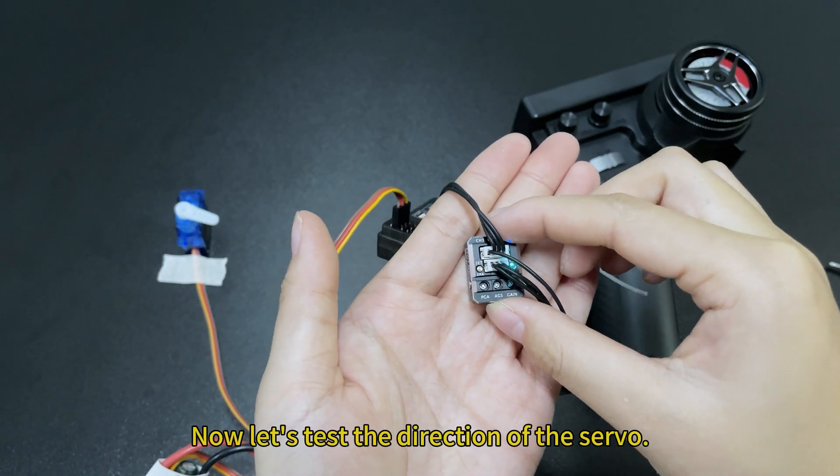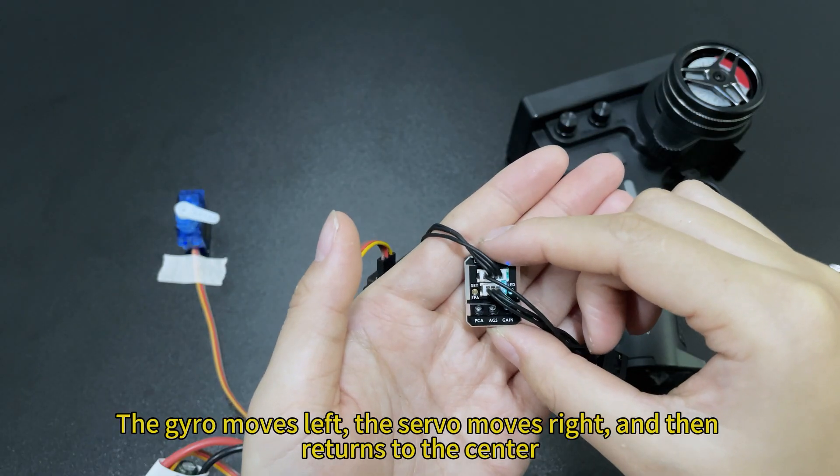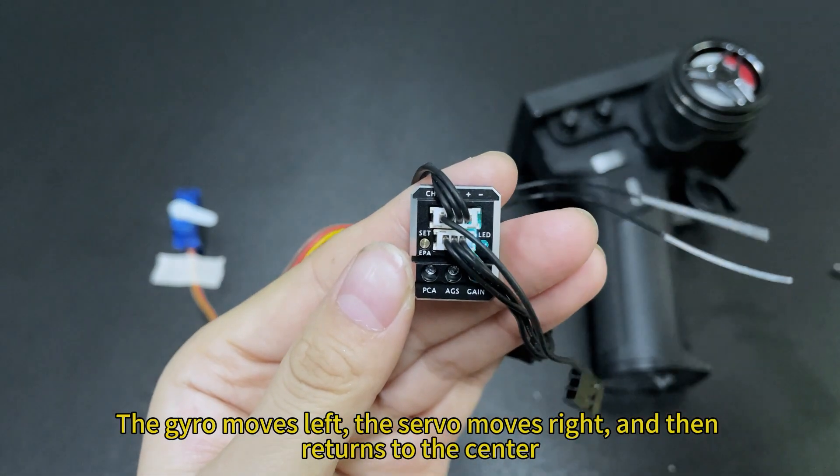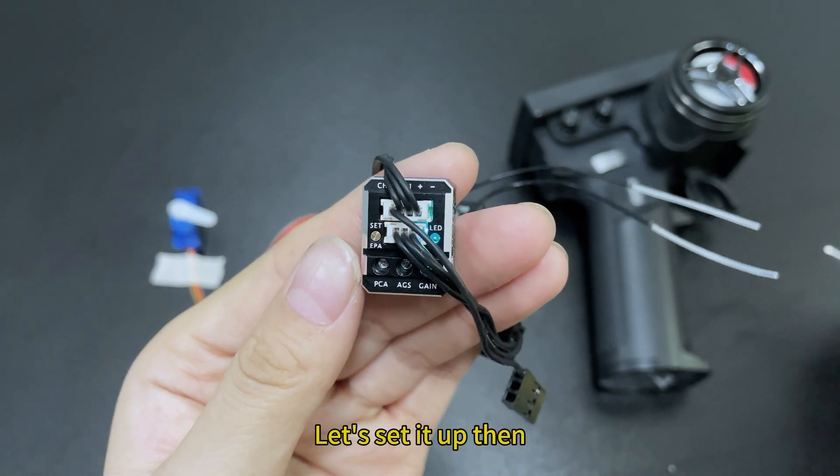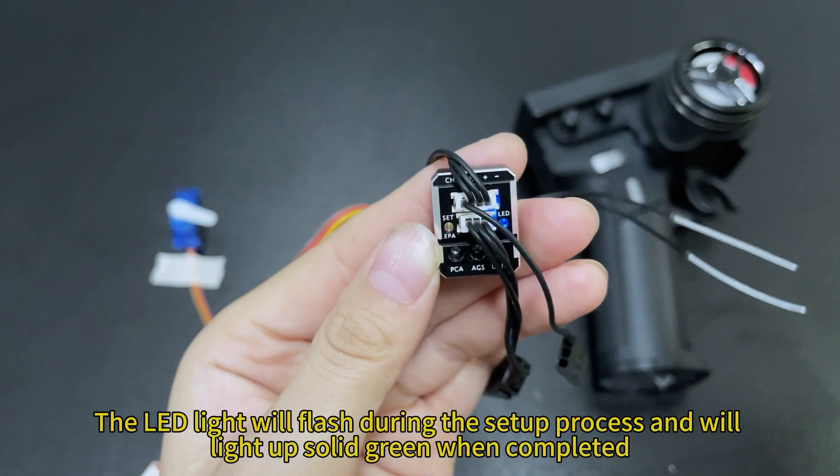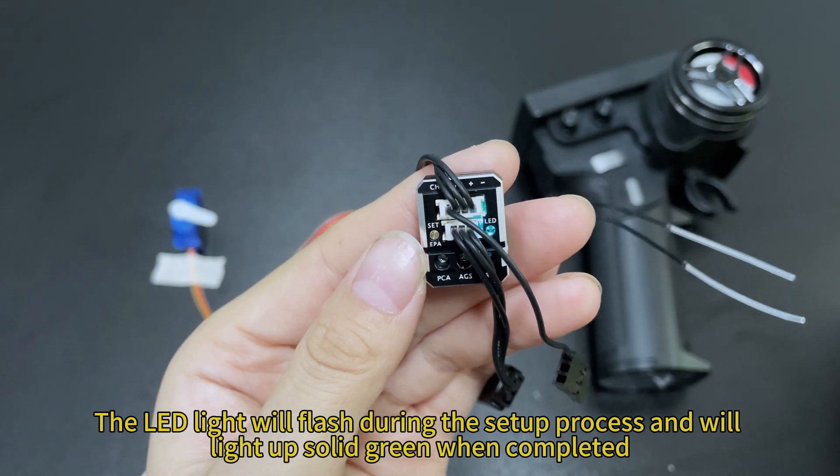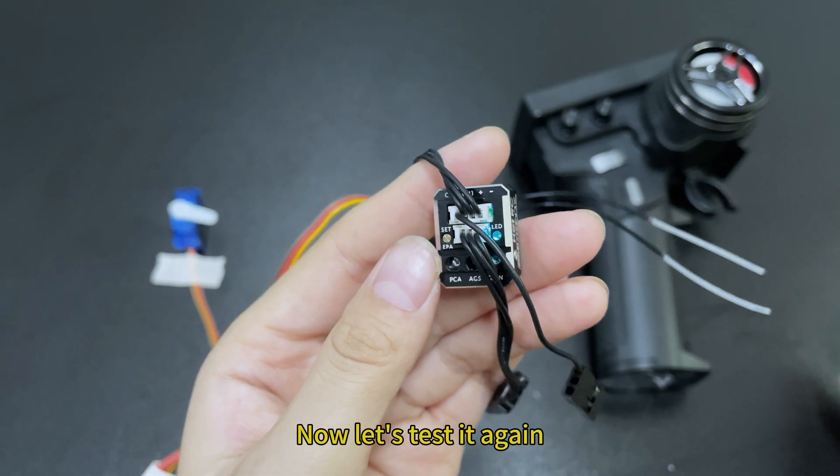Now let's test the direction of the servo. The gyro moves left, the servo moves right, and then returns to the center. Let's set it up then. The LED light will flash during the setup process and will light up solid green when completed. Now let's test it again.